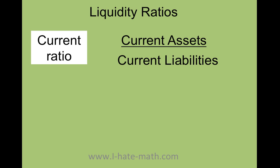Liquidity ratios — let's do the formula. Basically, the current ratio. This is current assets over current liabilities. There is not really a good number to know if your current ratio is good, but something very important: you always want the top to be bigger than the bottom. For example, 2 over 1 equals 2 — that is good, because that means you have more assets than liabilities. If you had 1 over 2, basically the opposite, that is not good — that means you have more current liabilities than current assets. So you basically want a current ratio greater than 1.